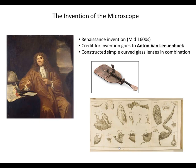Leeuwenhoek was by trade a merchant who traded in fine oriental silks, carpets, and rugs. He wanted to prove to his customers that he had the finest quality cloth, so he started constructing simple curved glass lenses to magnify the cloth. He found that using them in combination gave even greater detail and magnification. Using this simple curved-glass lens combination microscope, Leeuwenhoek made fairly detailed drawings of organisms — including these actual drawings of flea anatomy. Anton van Leeuwenhoek is truly the father of the microscope.